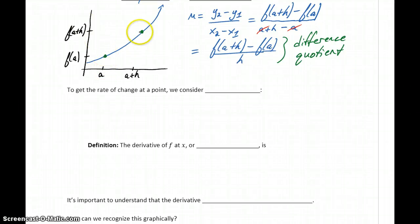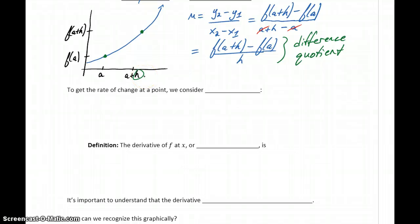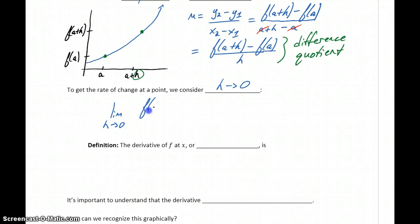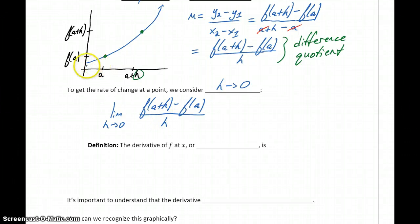To get the rate of change specifically at point a, we want to take point a plus h and bring it closer and closer, decreasing the distance between them — meaning this value for h needs to keep getting smaller. So to get the rate of change at a point, we consider what happens as h approaches 0. We take the limit of that difference quotient as h approaches 0, and that gives us the slope of the tangent line at exactly x equals a, which means this expression gives us the rate of change of our function at x equals a.